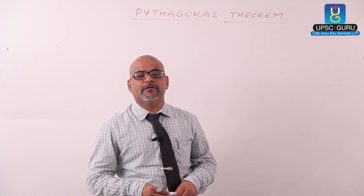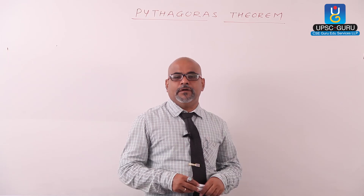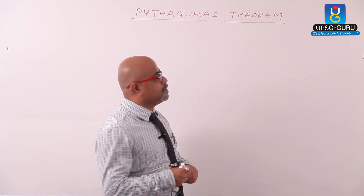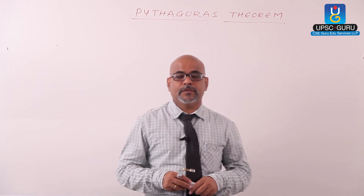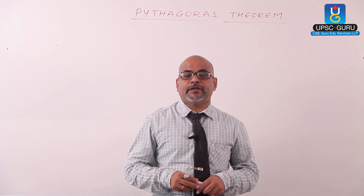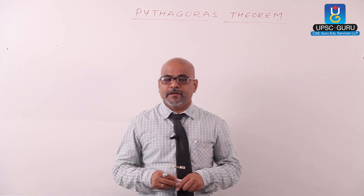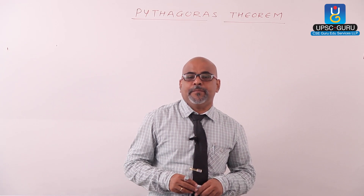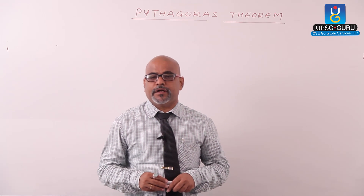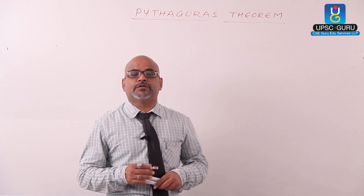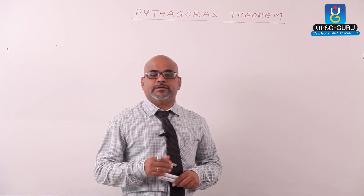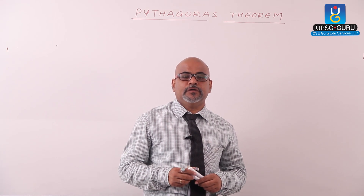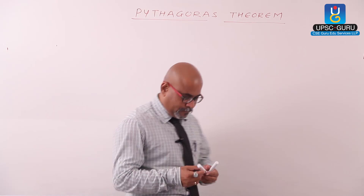Hello students, today we are going to see the Pythagorean theorem. The Pythagorean theorem says: in a right angle triangle, hypotenuse squared equals the sum of the squares of the other two sides.